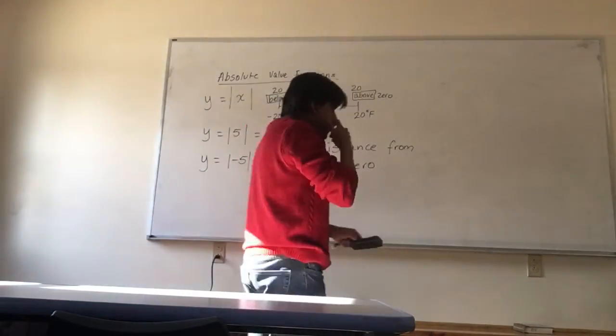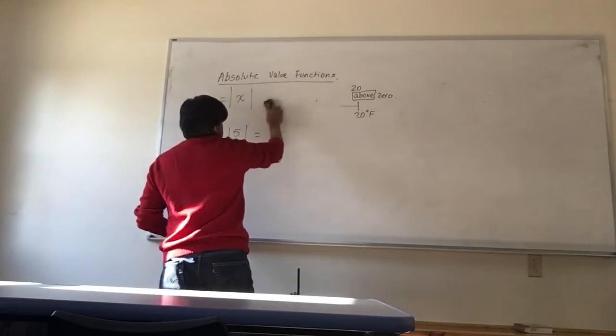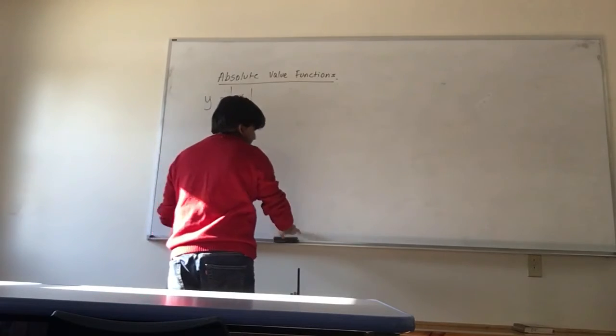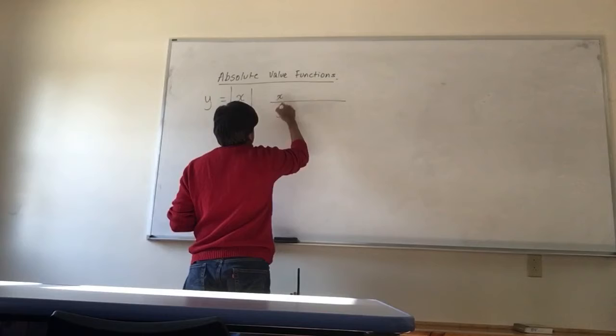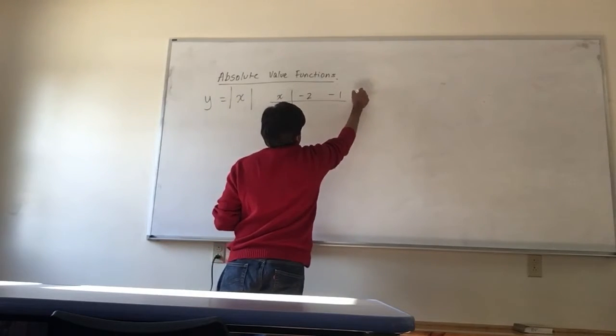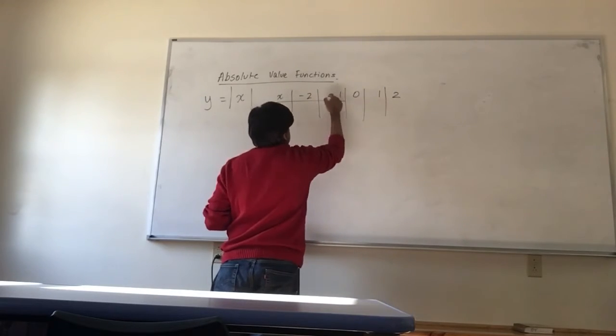So let's do some graphs. Let's just draw a simple graph. So if I were to take the graph of Y is equal to X, let's put in values for X and Y. So let's start with a few negative values, and then let's take some positive values.